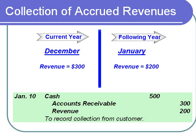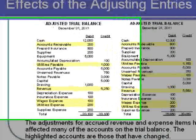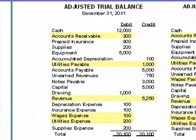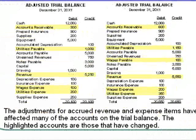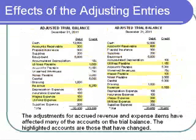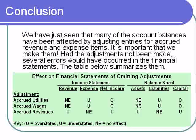Note that the $200 will appear on the January income statement, while the $300 has already been shown as revenue as of December 31st of the previous period. On this slide, we have the original trial balance shown on the left side, and on the right side is our current adjusted trial balance after the adjustments for accrued revenues and accrued expenses have been recorded. Many accounts have changed balances as a result of these adjusting entries. It is important, therefore, that we make them, and that we make them correctly.